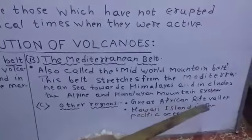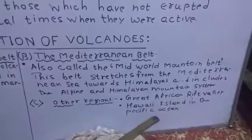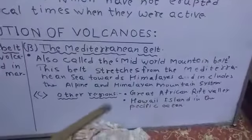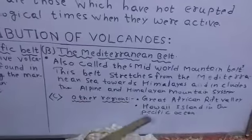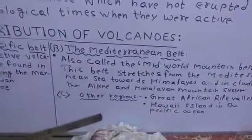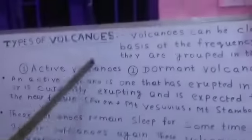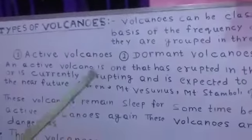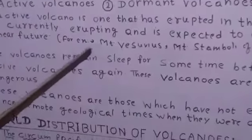The third region includes other areas such as the Great African Rift Valley and the Hawaiian Islands in the Pacific Ocean. These are the minor belts associated with volcanoes. Students, up to here I have explained the types of volcanoes. In the next video, we are going to see the effects of volcanic activity.